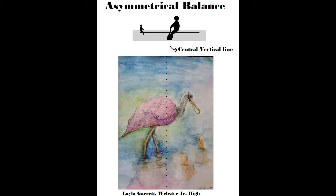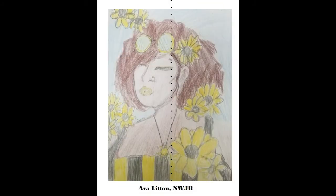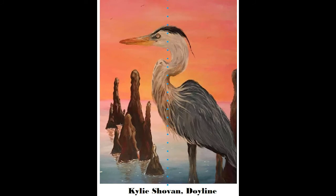In Layla Garrett's watercolor, she achieved asymmetrical balance by repeating the colors used in the legs on the left hand side over on the right hand side in the water, as well as in the beak and the size of the shapes. In Ava Gardner's portrait, she achieves asymmetrical balance by making the big flowers close to the line and multiple small flowers on the other side, as well as yellow spread throughout. Finally, Kylie Chauvin achieved balance by making a lot of smaller cypress knees on the left hand side to balance with the heaviness of that pelican on the right hand side.